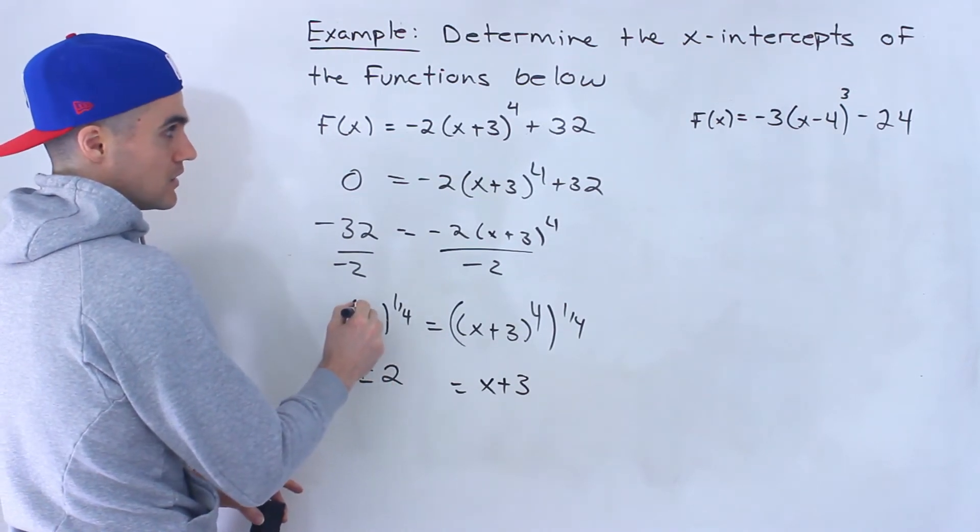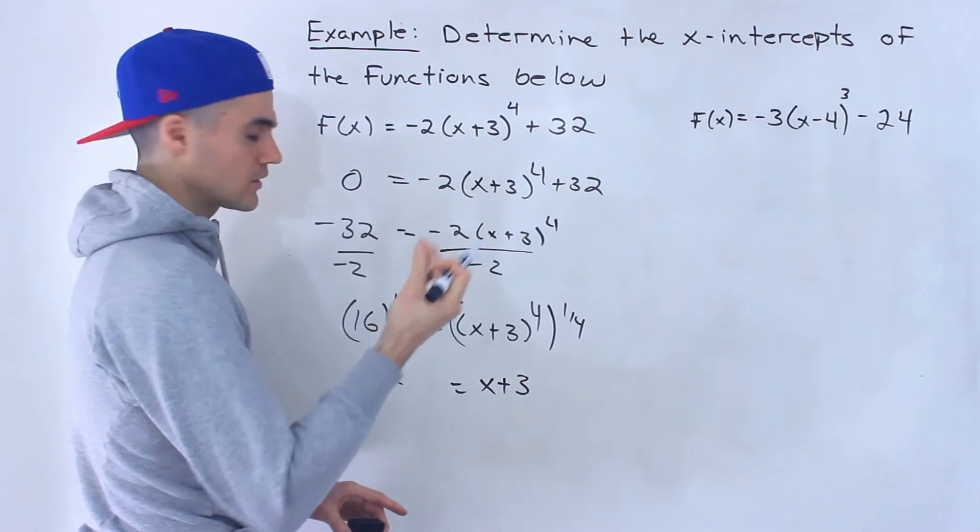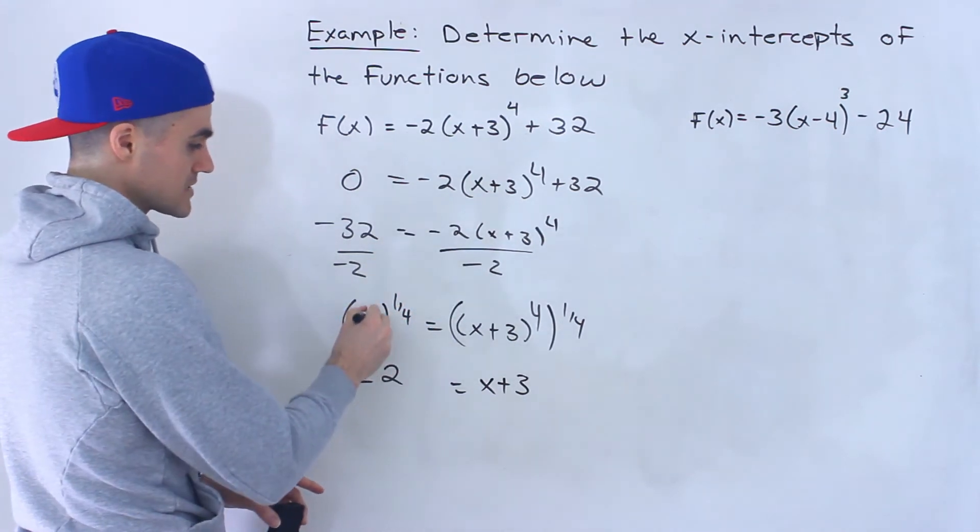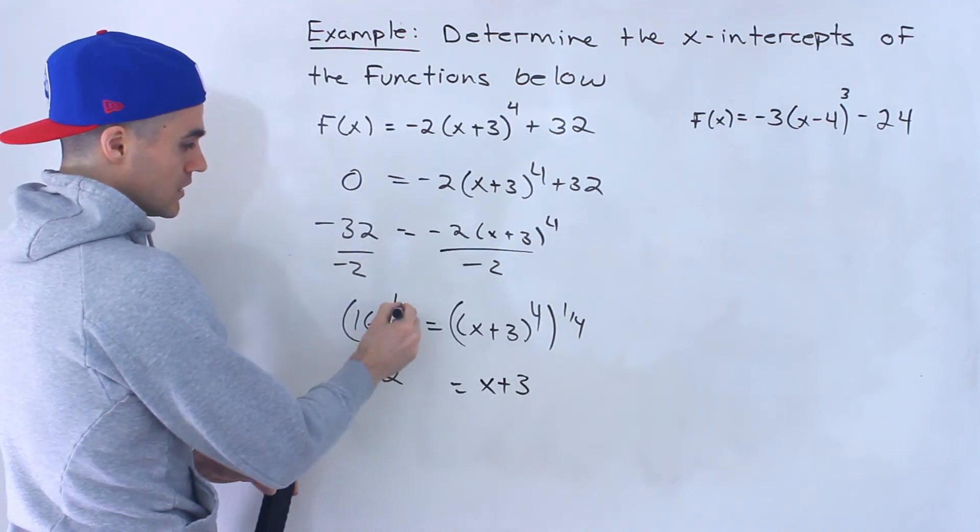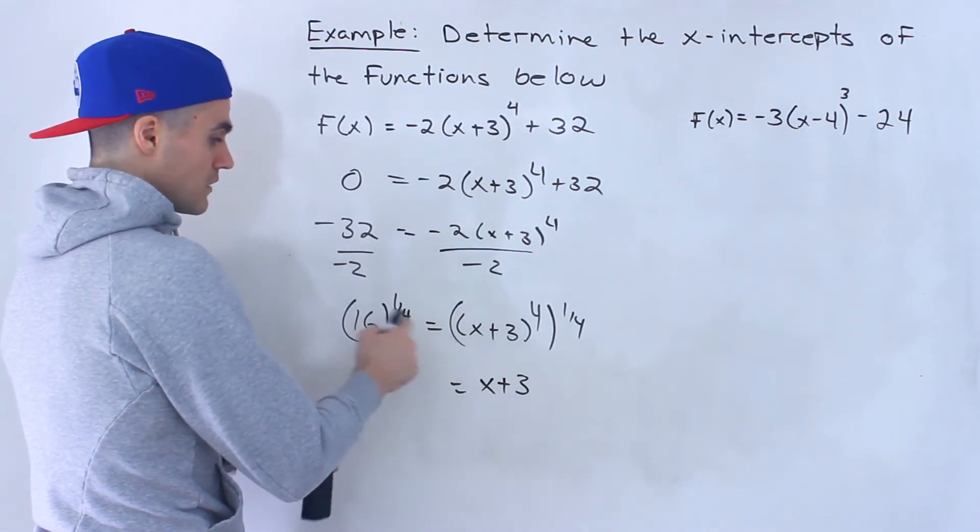If this ends up being 0, then it's that case of where there's going to be only one x-intercept. If it ends up being negative, then there's no x-intercept. There's not going to be anything to solve.